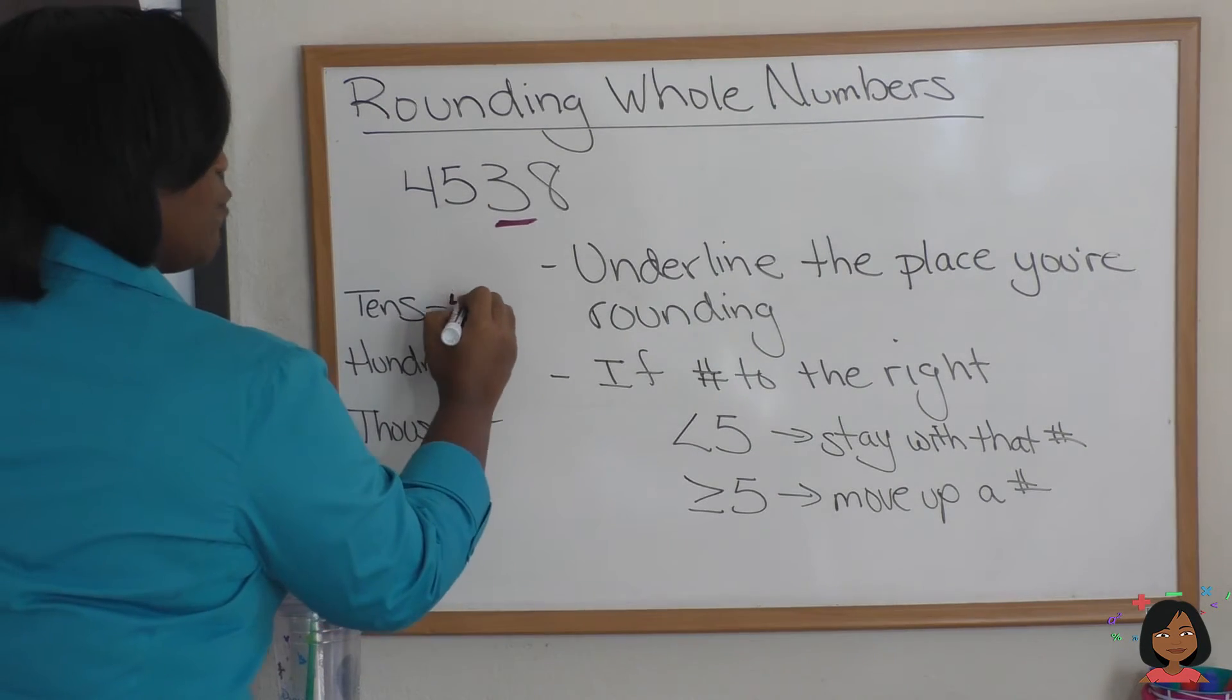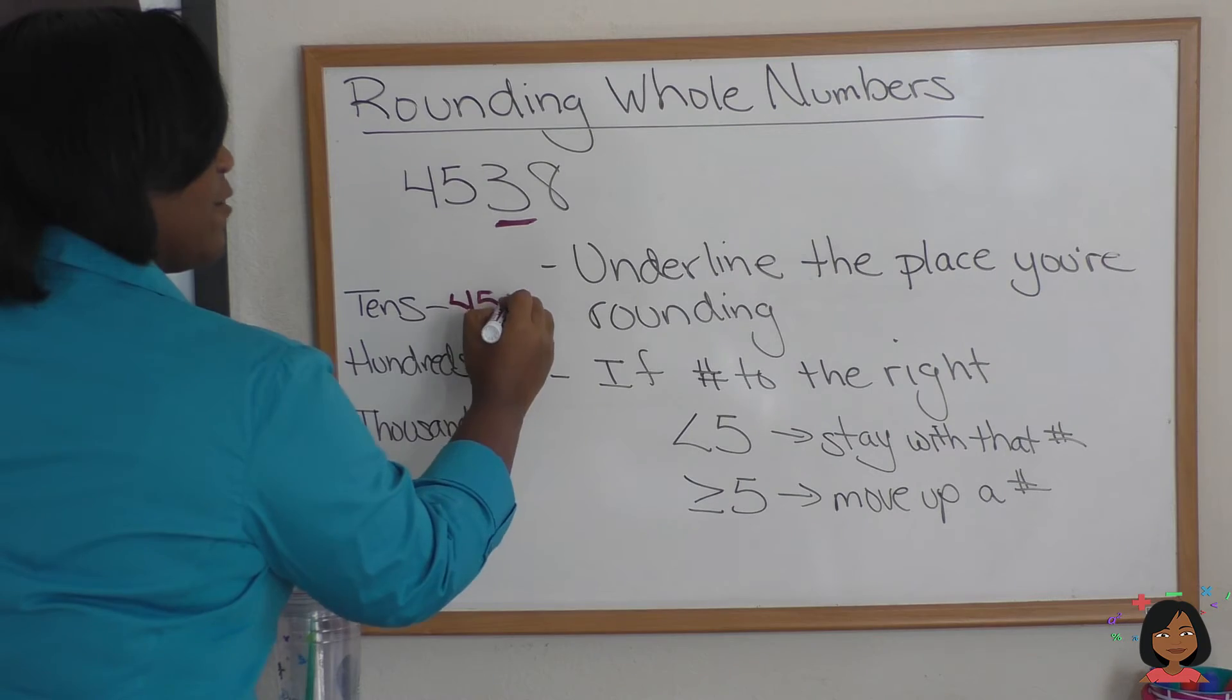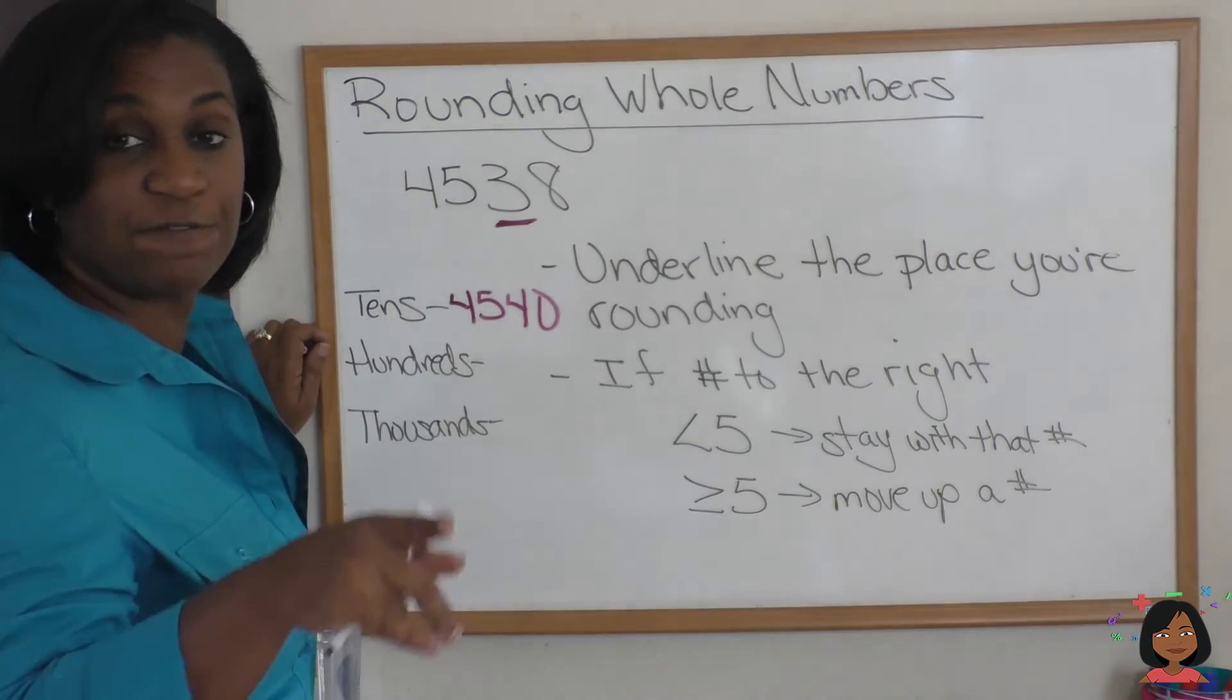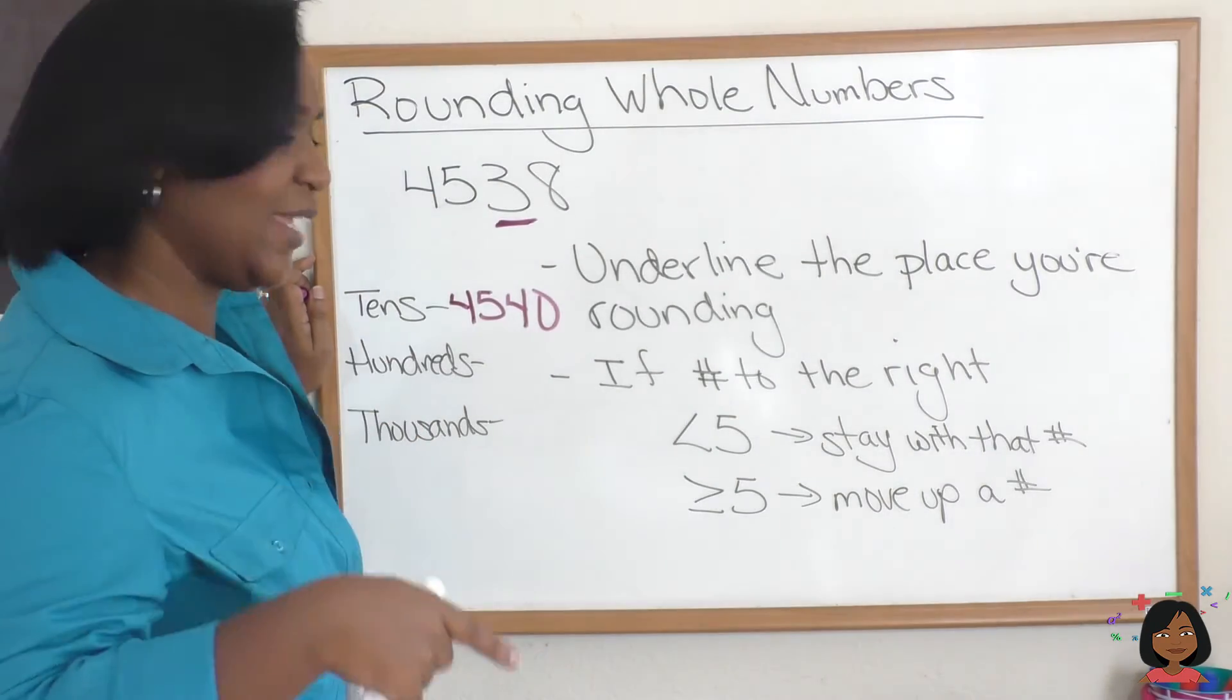Instead of three, we're going to round this to 4540. As you see, we went from three to four because the eight was greater than five. Let's try it again. Let's round to the hundredths column.